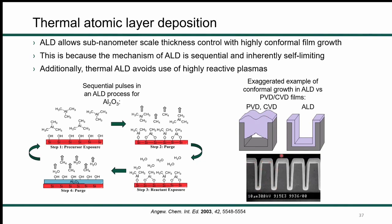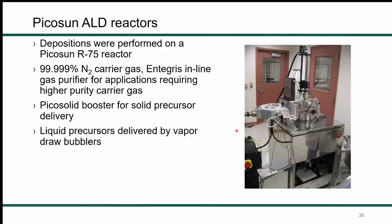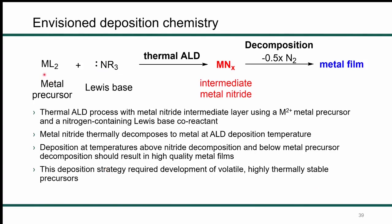We use thermal ALD because it results in conformal films, while physical vapor deposition and chemical vapor deposition can result in voids or non-conformal film growth in high aspect ratio features. We also don't use plasma-enhanced ALD because in very high aspect ratio features, the reactive plasma species can recombine on the surface and give non-conformal growth. Here's a TEM image of an ALD film showing nice conformal growth. The reactor we use is a Picosun R75 — all the precursors and pulsing mechanisms are in the lower cabinet, basically very intricate tubing and pulsing valves. It's a relatively small piece of equipment.